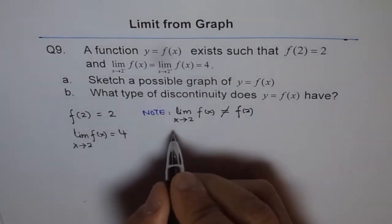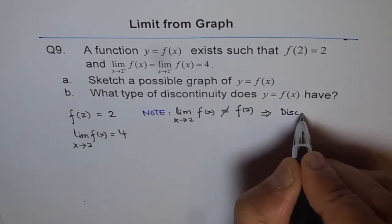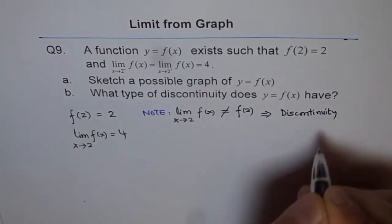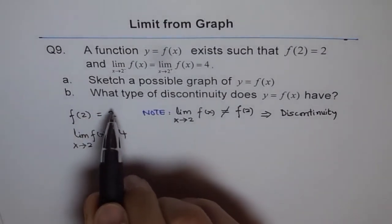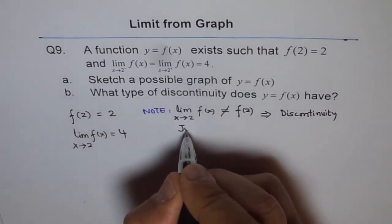So this is kind of very important. So what we note here is that limit as x approaches 2 of f of x is not equal to the value of the function at 2. This is kind of the most important thing you observe. That means there is a discontinuity. This implies a discontinuity. And what type of discontinuity? That is part b. What type of discontinuity it has? This is called jump discontinuity.